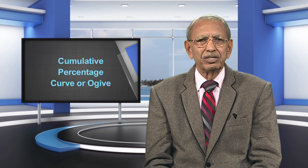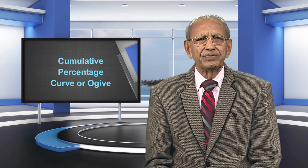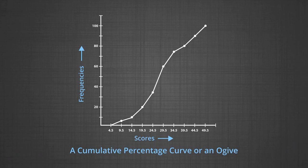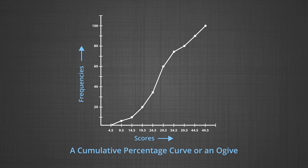A cumulative percentage curve, or ogive, based on the data of table one is shown in figure seven. This ogive has various score points on the baseline and percentages on the vertical line, instead of raw frequencies. It is a flowing type of curve that rises progressively. There are no inversions or plateaus, and it also takes an S shape. It is useful because it standardizes frequencies into percentages, enabling easier comparison across distributions.